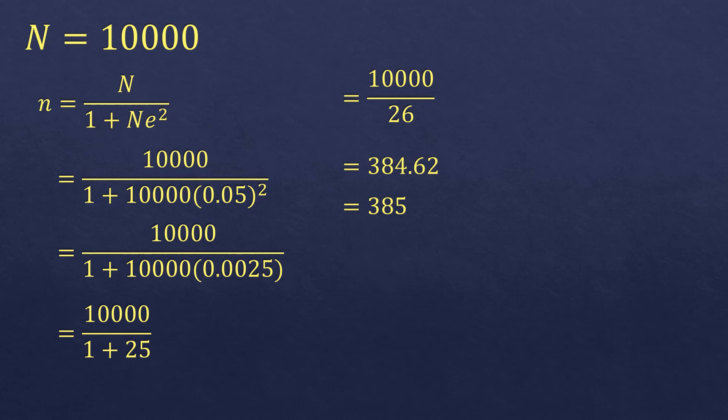So the minimum number of samples for a 10,000 population size is 385 samples. As you can see, as you make it bigger and bigger population size, it will get closer and closer to 400. So the sample size will not reach more than 400. Even if you make it a population size of 1 million, the sample size will still be up to 399.999 and so on. It will just be closer and closer to 400.